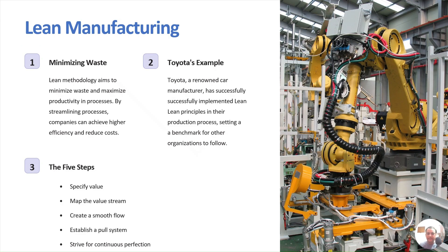Lean manufacturing is a production or process improvement methodology that aims to maximize productivity and minimize waste within service or manufacturing operations. It is based on the principle of delivering value to the customer by eliminating waste and continually improving processes. Lean manufacturing is closely related to just-in-time manufacturing, which aligns production with demand, and is part of the operational model implemented by Toyota, also known as the Toyota Production System.